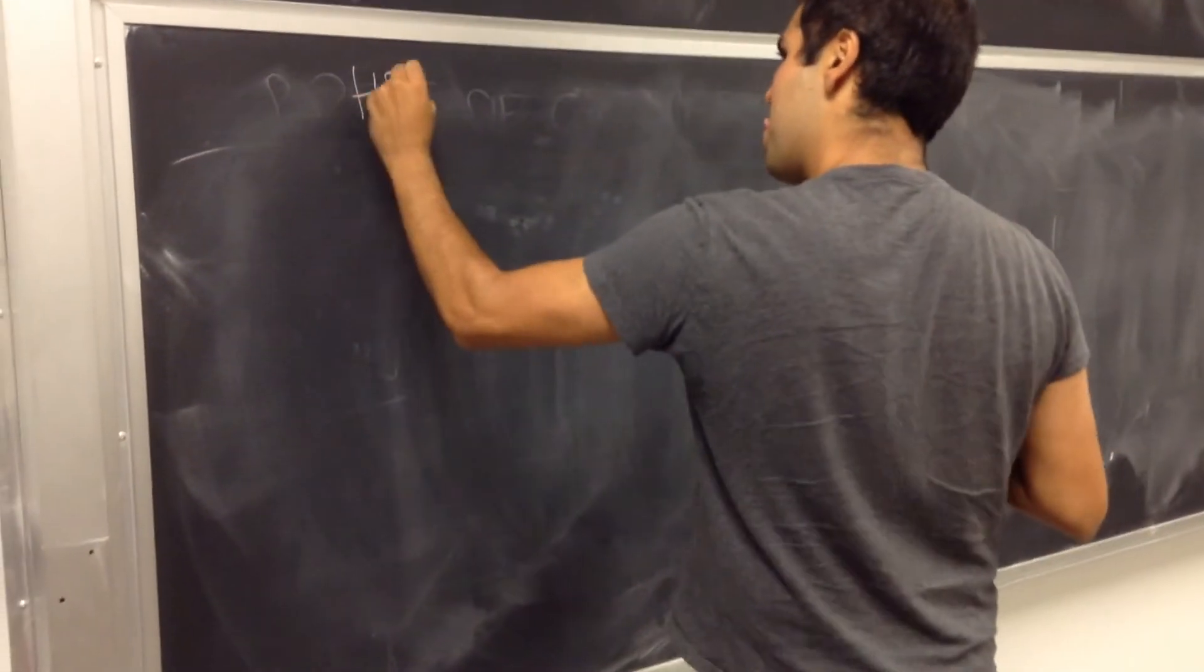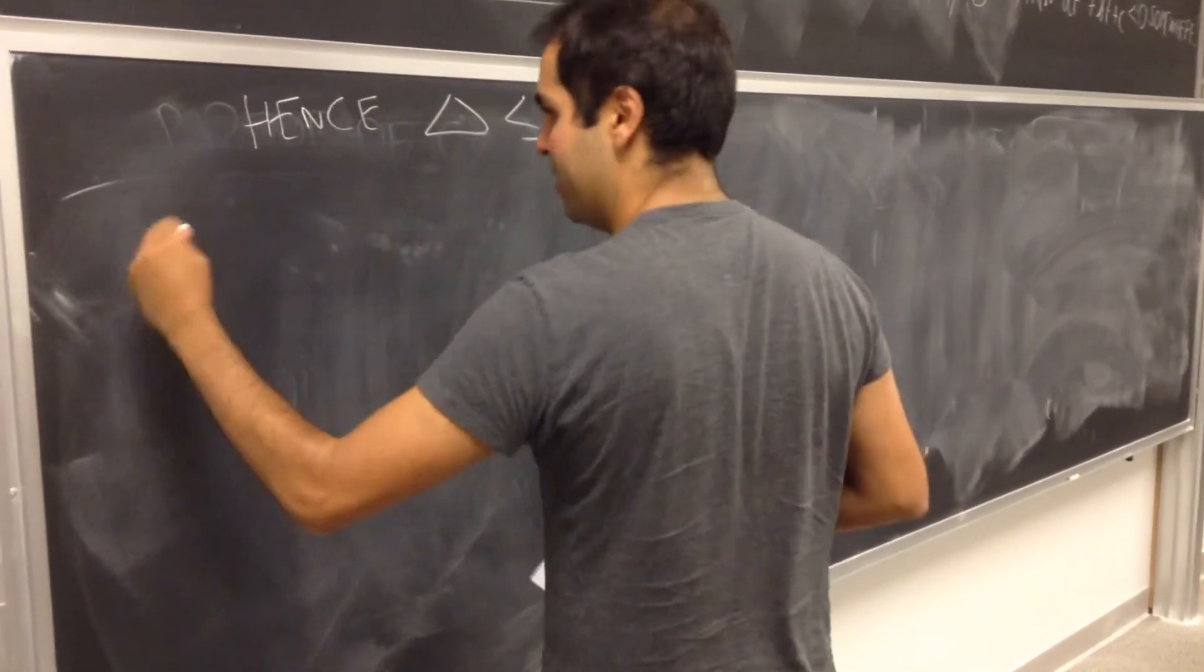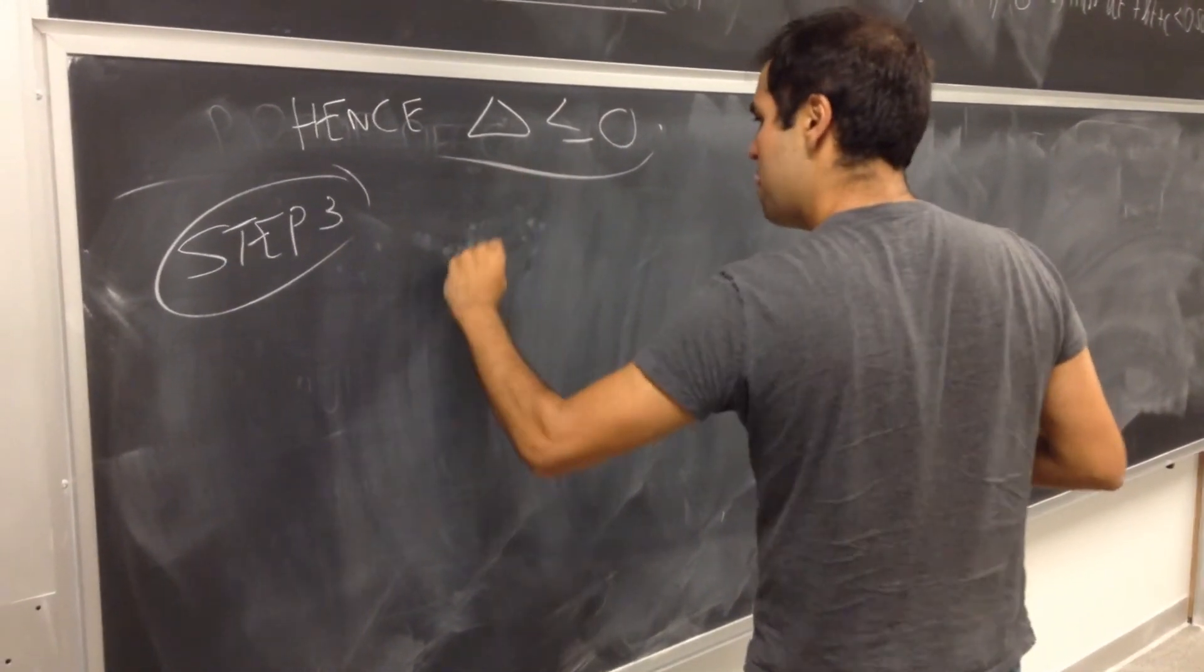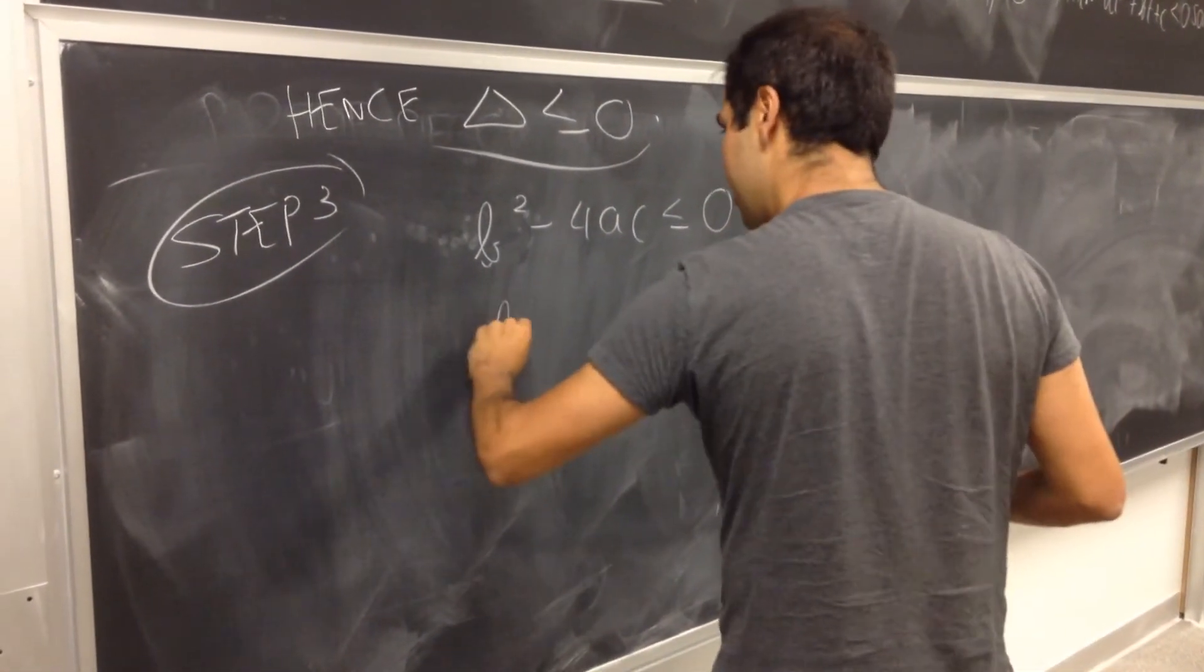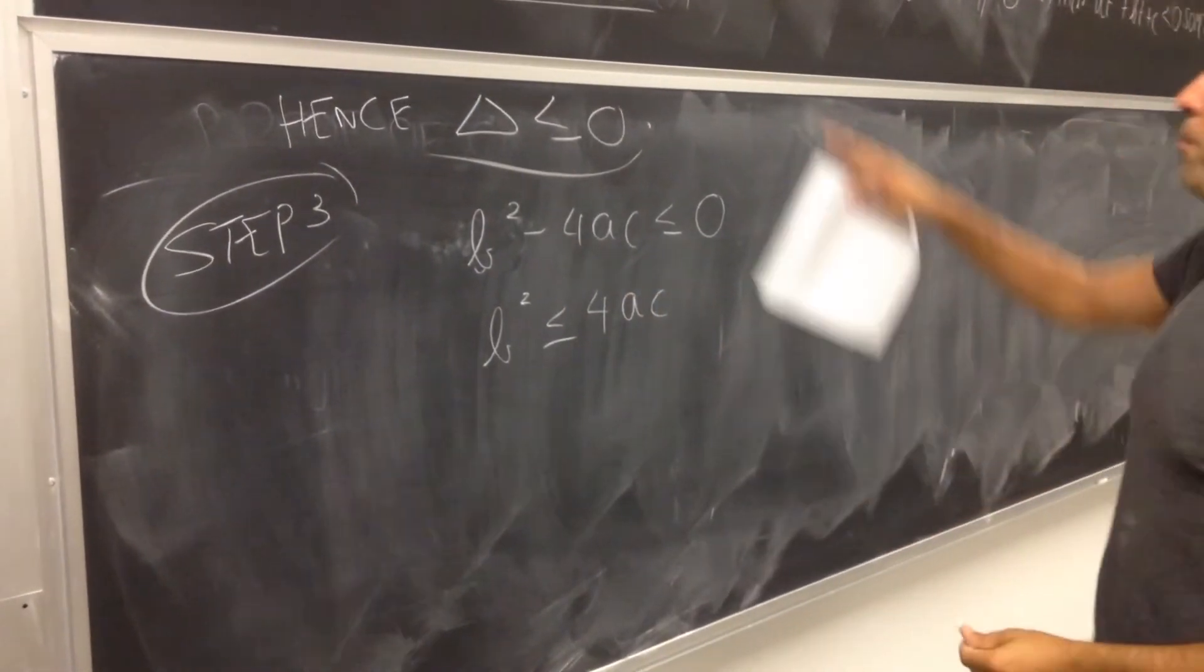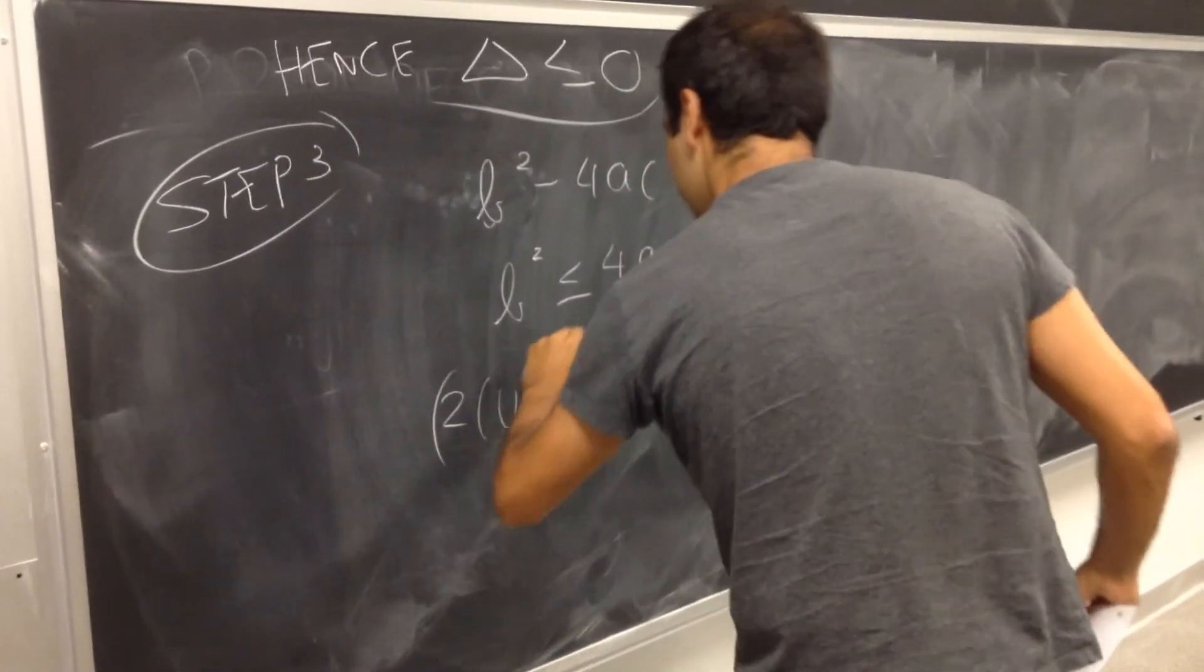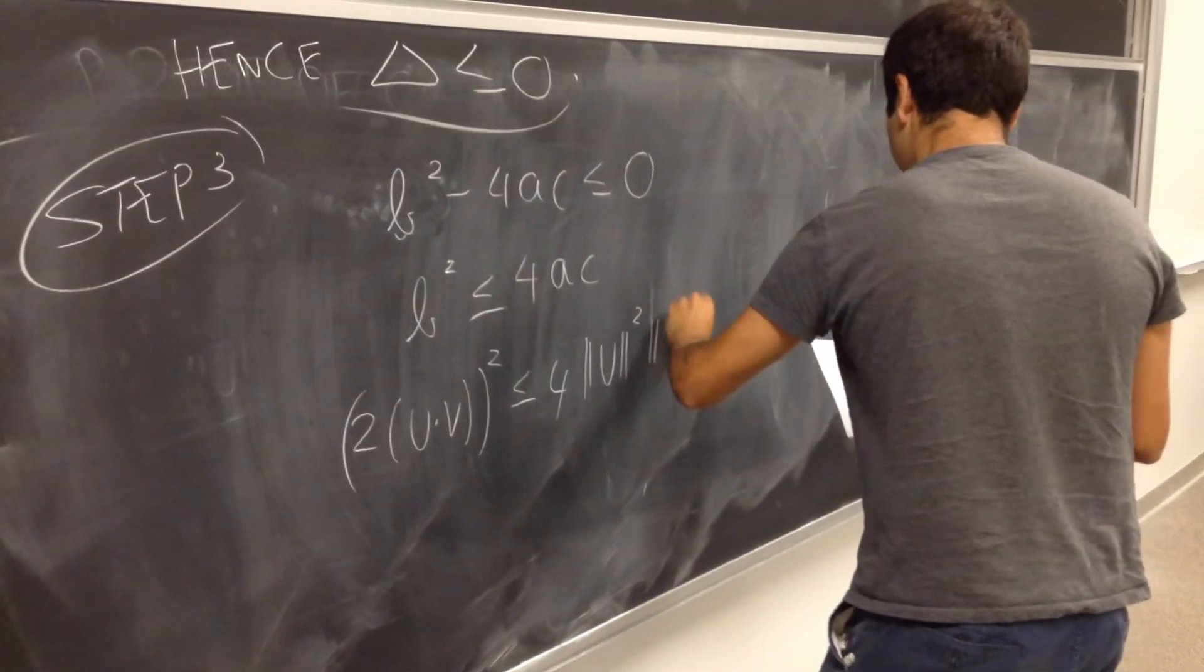So hence, the discriminant is less than or equal to zero. What does that mean? So that's step three. This means that b squared minus 4ac is less than or equal to zero. So b squared is less than or equal to 4ac. But what is a? What is b? What is c? What is love? You know?